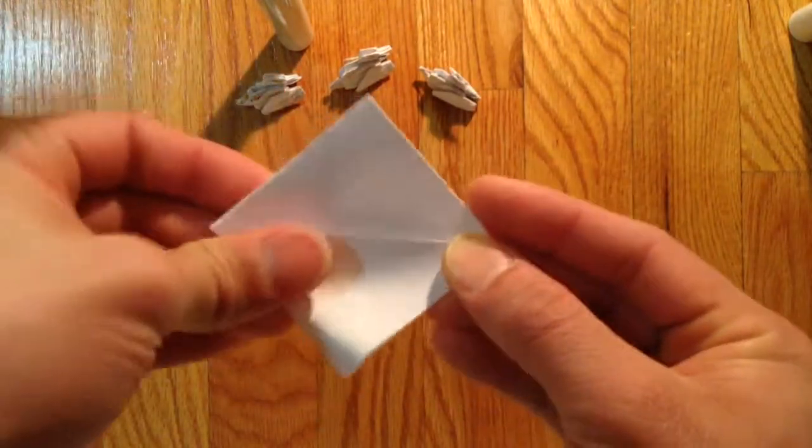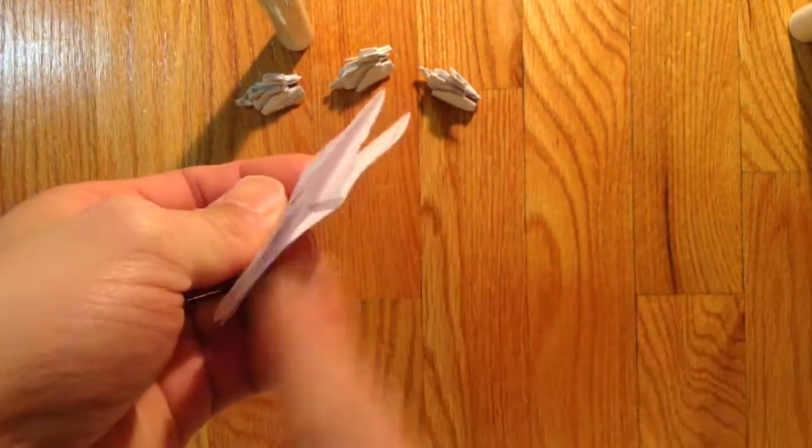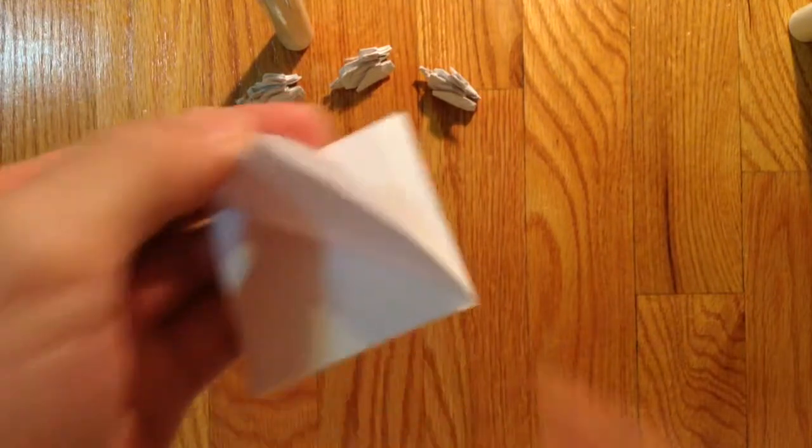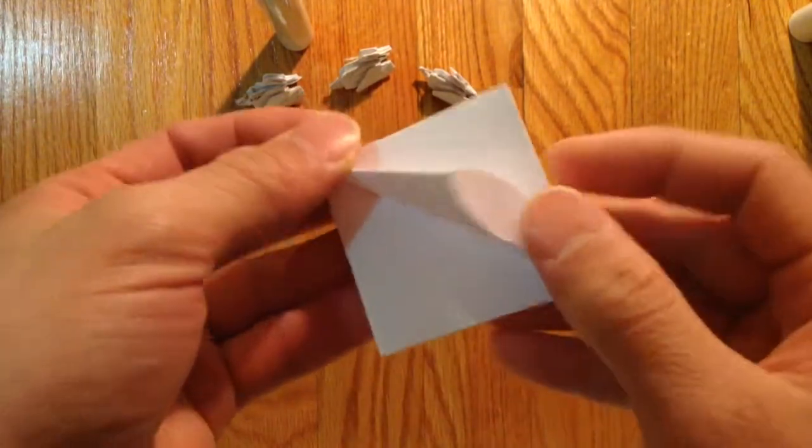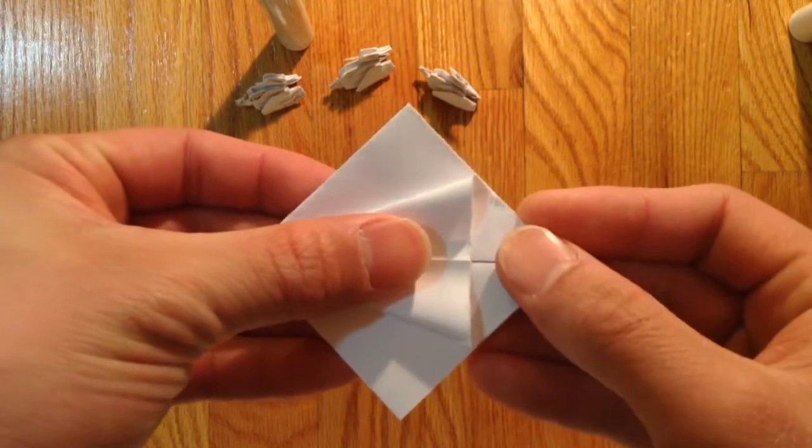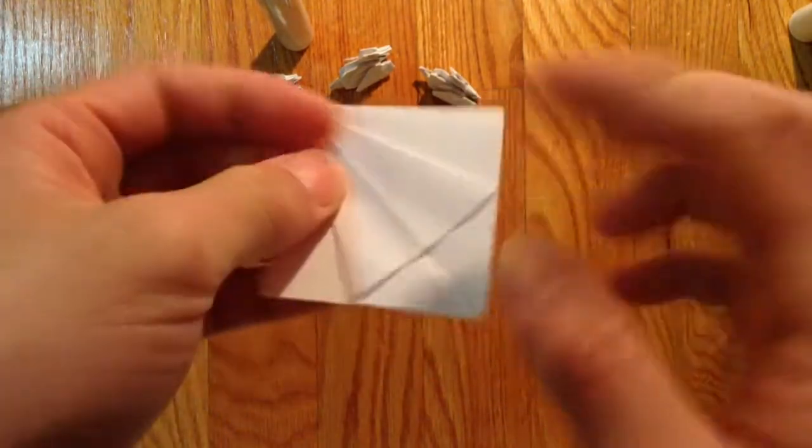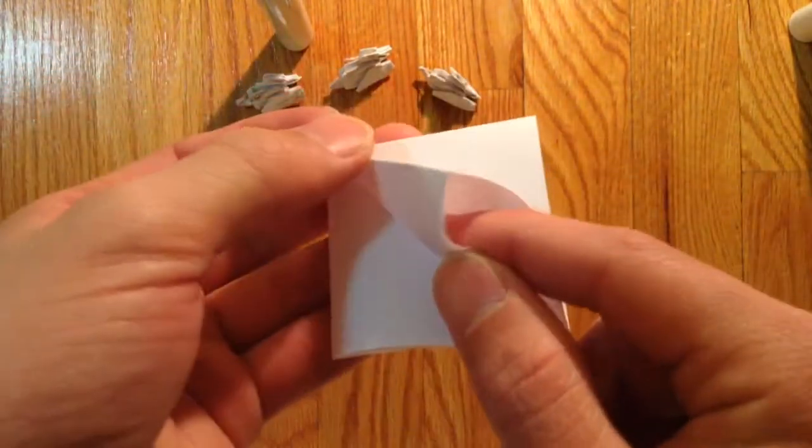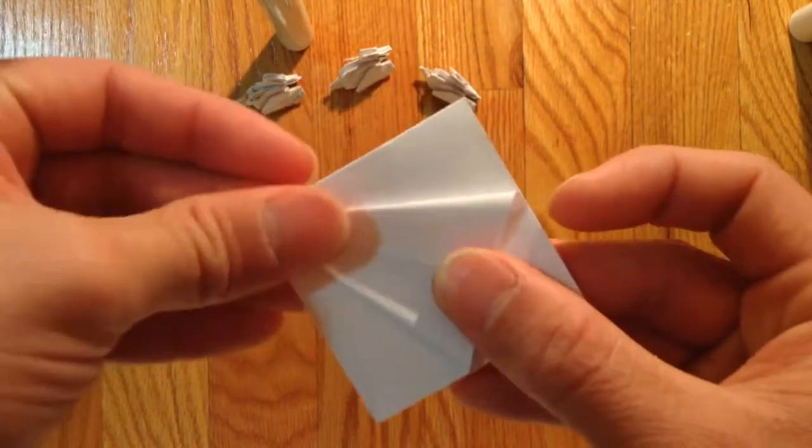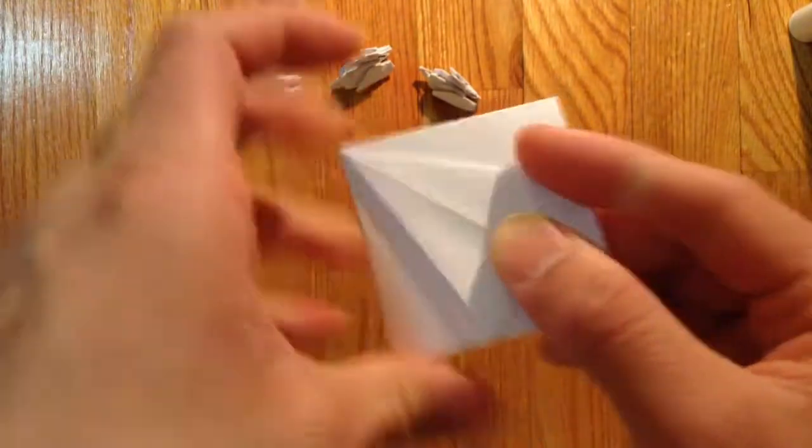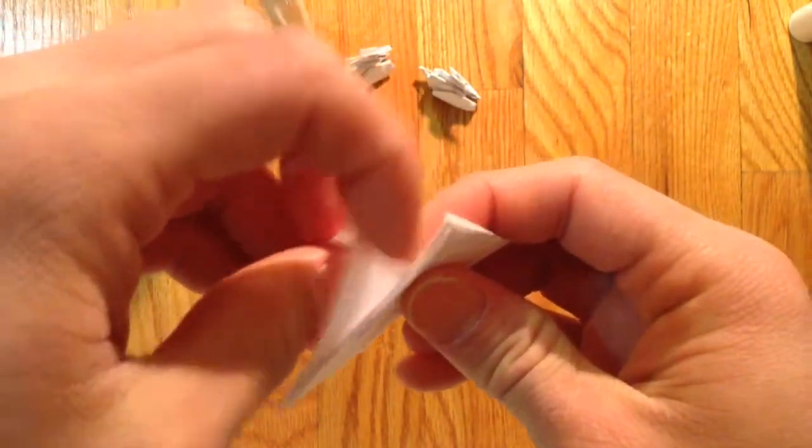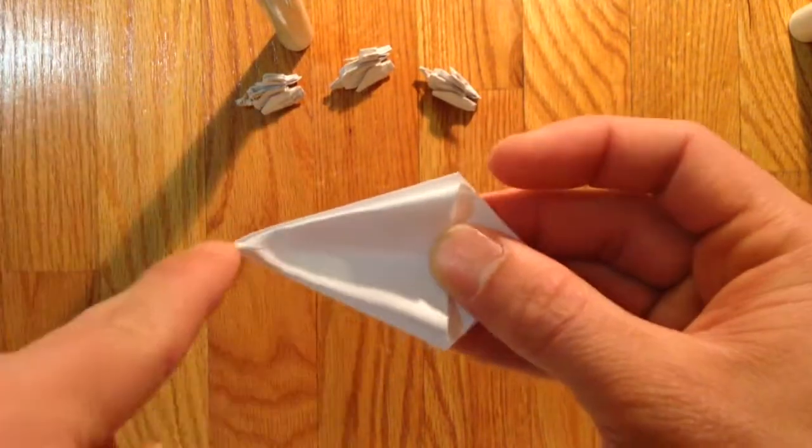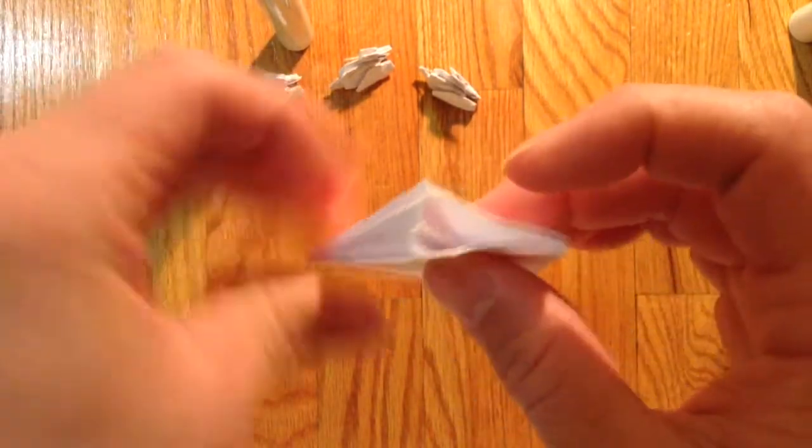Then you're going to open all these pockets here. So you open here and fold that down, and do that for the rest of them. So open this pocket, fold that, and just do the same thing on this side as well. And make sure it lines up in the middle like always.